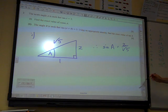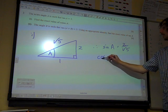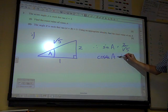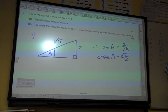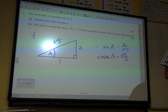And if sin A is 2 over root 5, then cosec A is root 5 over 2. And that would be brilliant. That's what we want from that.